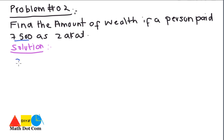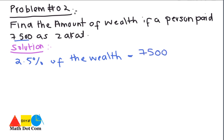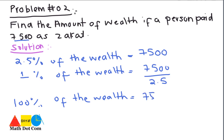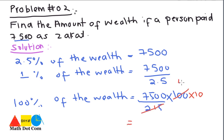2.5% of the wealth is 7,500. Then 1% of the wealth will be 7,500 over 2.5. Then 100% of the wealth — meaning the total wealth — will be 7,500 over 2.5 multiplied by 100. We remove the decimal point from 2.5 and put 10 in the denominator, so 100 divided by 10 gives 10, and 10 divided by 25 simplifies to give 7,500 multiplied by 40.